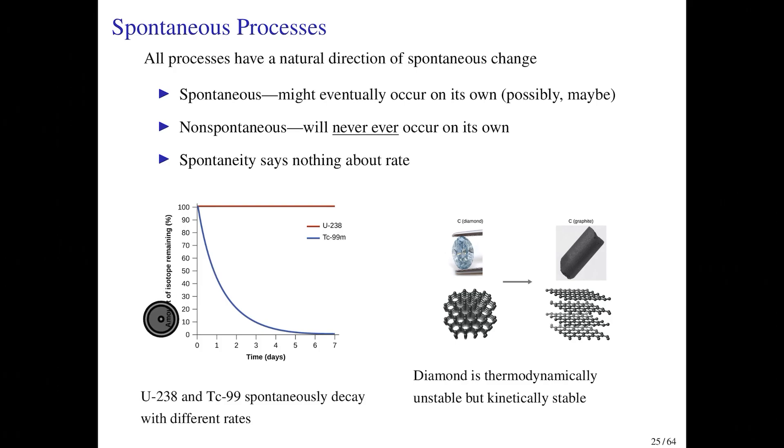Uranium-238, on the other hand, while it is radioactive and spontaneously decays, the rate at which it decays is much slower than that of technetium-99. Unfortunately, thermodynamics can tell us nothing about the rate at which a process occurs. For that, we need to turn back to the tools that we've already looked at for chemical kinetics.